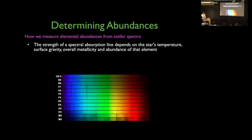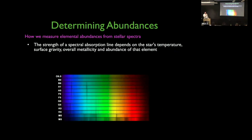Let's go back to spectroscopy 101 — how do we actually determine abundances? The strength of stellar absorption lines depends on a number of things: mostly the star's effective temperature, the surface gravity, the overall metallicity of the star — the content of heavy elements — and then the abundance of the particular element you're looking at. Here is a temperature sequence showing that the dominant absorption lines, the vertical dark features, vary with temperature.